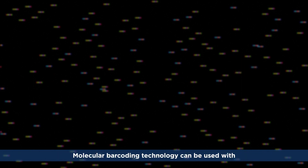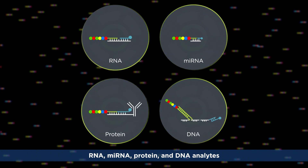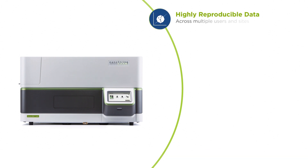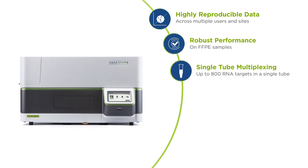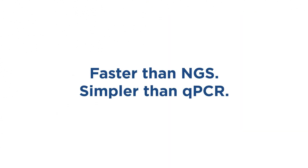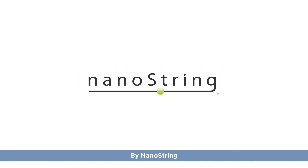Molecular barcoding technology can be used with RNA, microRNA, protein, and DNA analytes. Direct detection with N-Counter technology provides several advantages: highly reproducible data, robust performance on FFPE, single tube multiplexing, simple protocol with minimal hands-on time, flexible sample input, and simple data analysis. Faster than NGS, simpler than QPCR. Direct detection with N-Counter technology by NanoString.